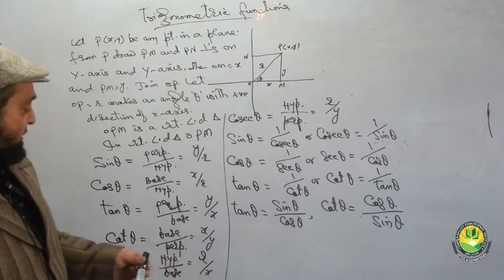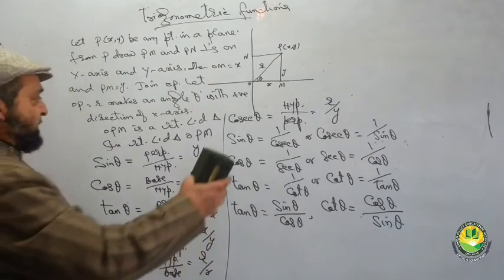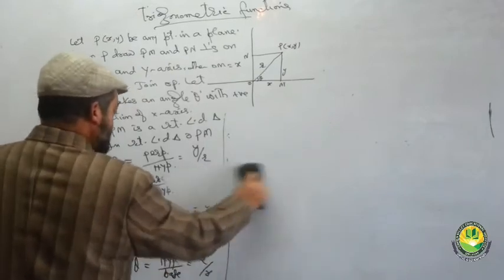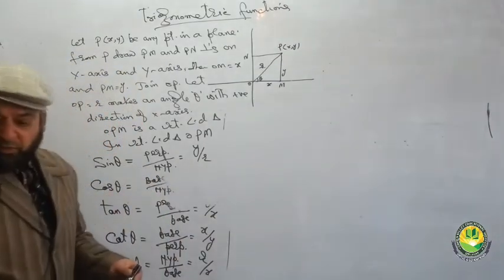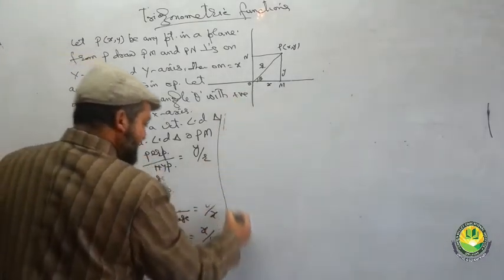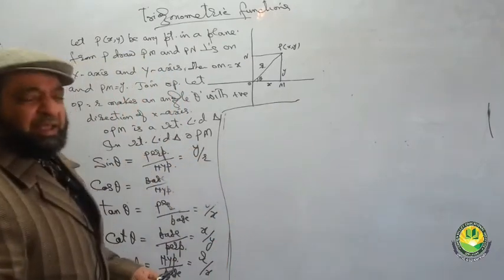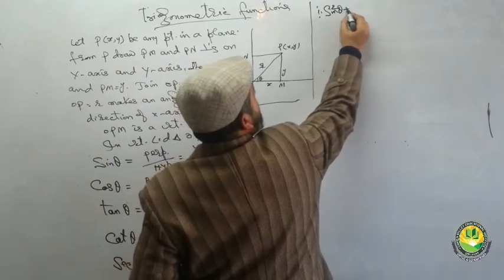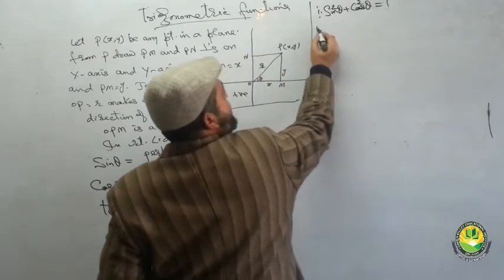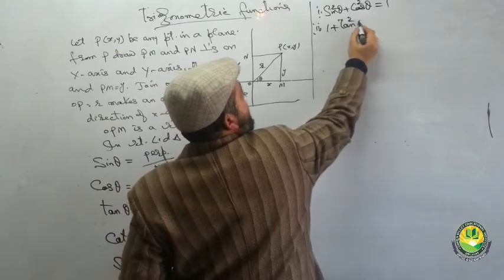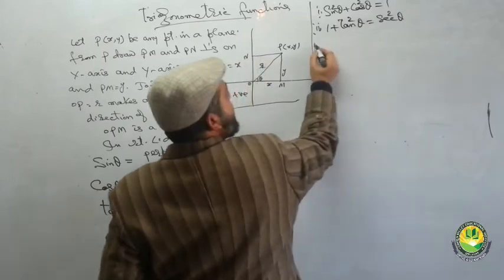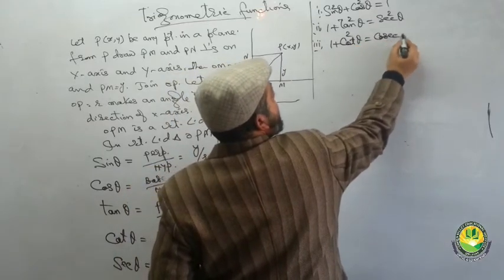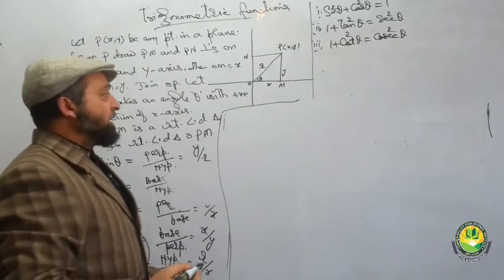After this there are trigonometric identities. There are three identities here. The first is sin²θ + cos²θ = 1. The second is 1 + tan²θ = sec²θ. The third is 1 + cot²θ = cosec²θ.